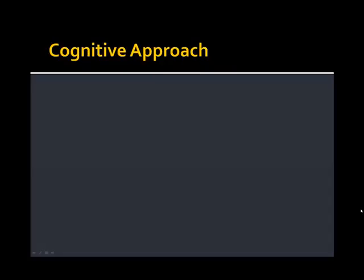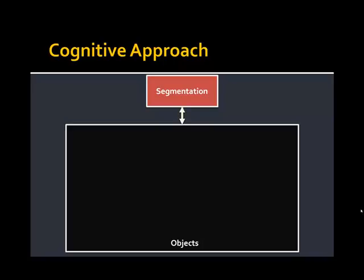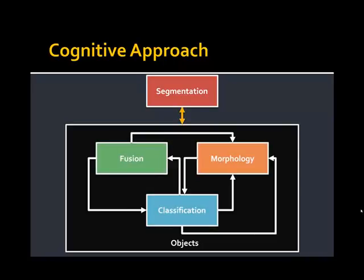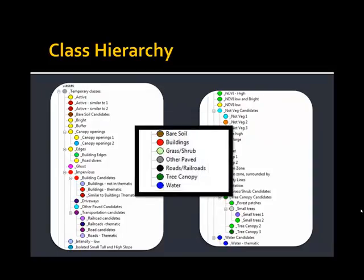So we take a cognitive approach to object-based image analysis. We use image segmentation algorithms to generate image objects, but then it's not just a simple classification — we often bounce back, re-segment those image objects, apply image object fusion to group similar objects, assign them to temporary classes, perhaps segment again, and use morphology algorithms to refine their shape until we reach a final classification. This iterative process requires a detailed class hierarchy. In Jefferson County we generated only seven final land cover classes, but used three to four times that many classes in the process to build semantic knowledge for the final classification.